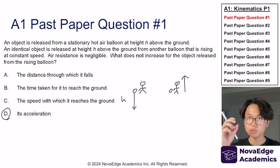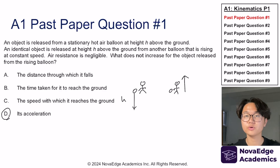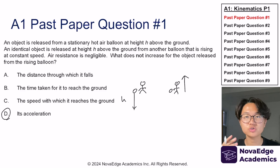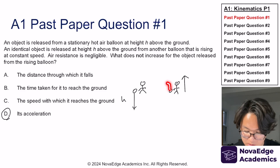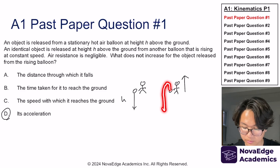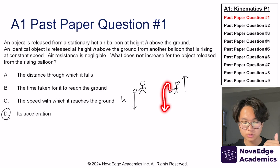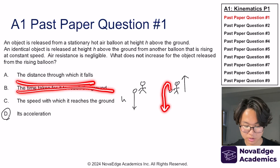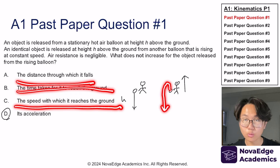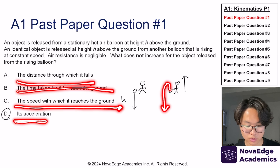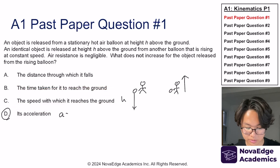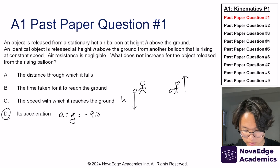Why does it go up? Because the ball is being released with the movement of the balloon, which means it has an initial velocity upwards, same as the balloon, but then it will come down. This means it goes through a greater distance, takes a longer time, and also has more height to accelerate and reach a faster speed at the bottom. The only thing that's always constant is the acceleration, which is gravitational acceleration: minus 9.81 meters per second squared.